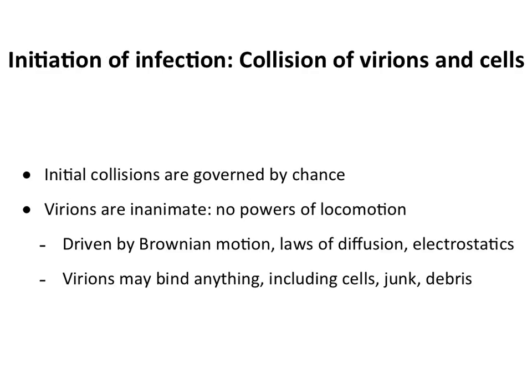Viruses have to find a cell somehow, and most of this is actually random. Viruses float around in air or various fluids; they have no means of locomotion and depend on random collisions to find the right cell. This is one reason why an infected cell makes so many virus particles. They can bind junk in your respiratory tract or anything else — the initial encounter is purely by chance, driven by Brownian motion, diffusion, and electrostatics.